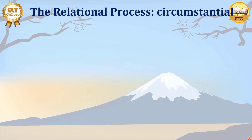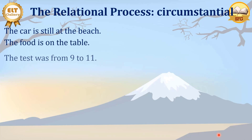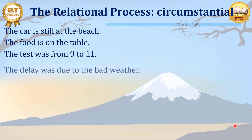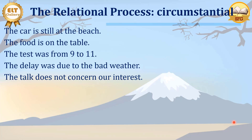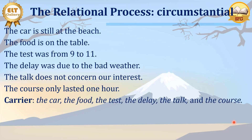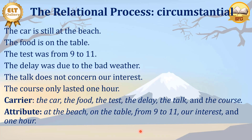Now let's continue with the circumstantial. 'The car is still at the beach' — we have the circumstantial: the place. 'The food is on the table.' 'The test was from 9 to 11.' 'The delay was due to the bad weather.' 'The talk doesn't concern our interests.' 'The course only lasted one hour.' Here we have the carrier — the car, the food, the test, the delay, the talk, the course — and we have the attributes: 'at the beach,' 'on the table,' 'from 9 to 11,' 'the bad weather,' 'one hour.' We have several kinds of attributes in these clauses.